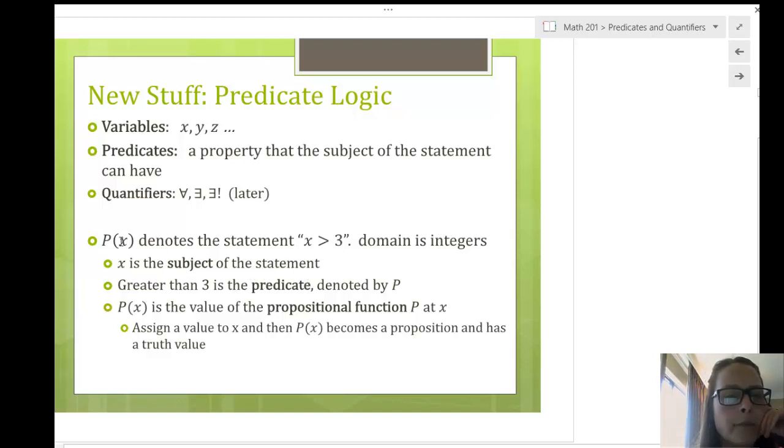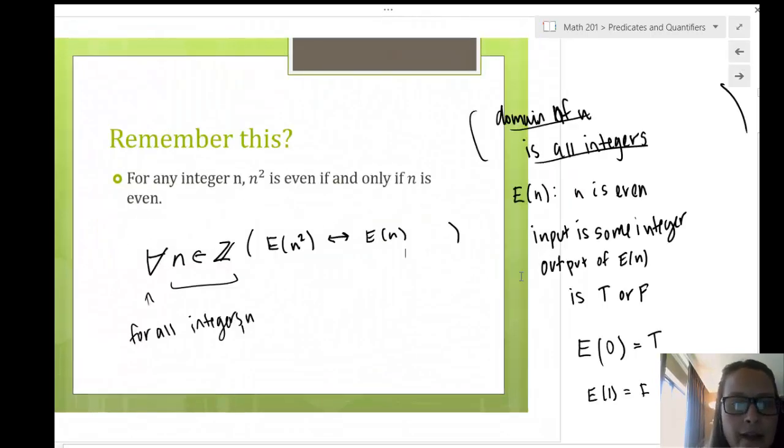So, our predicate here, this is another example, P of x, represents the statement x is greater than 3. So, this is our propositional function, right? I mean, it works really similar to a proposition, right? The only thing is that, depending on what we plug in, allows us to have sometimes true, sometimes false, okay? And we can't, if I just look at, let's say, what's P of y? I don't know, right? I don't know what y is. So, in order to evaluate the truth of a predicate, I have to have some sort of information about y.